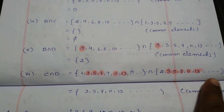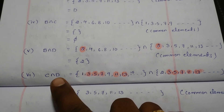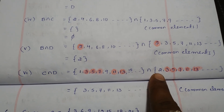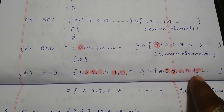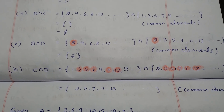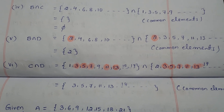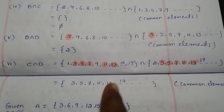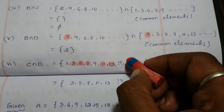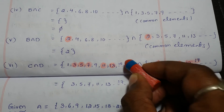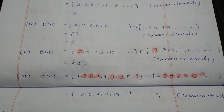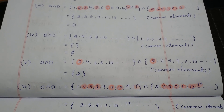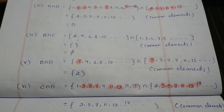Next, C intersection D. C is the set of odd natural numbers: 1, 3, 5, 7, 9, 11, 13, 15, and so on. D is the set of prime numbers: 2, 3, 5, 7, 11, 13, 17, and so on. The common elements are 3, 5, 7, 11, 13, 17, and so on — infinitely many common elements. Intersection always means we write the common elements from both sets.